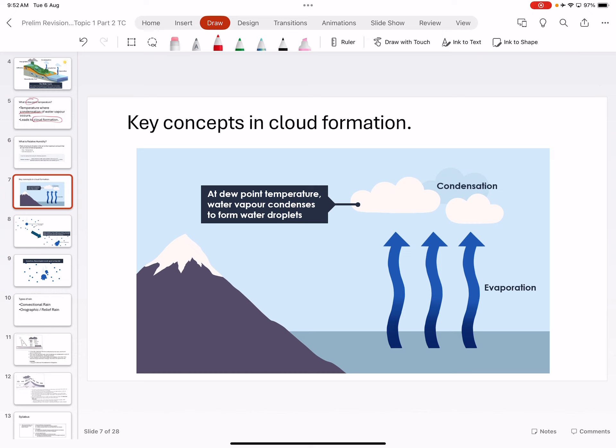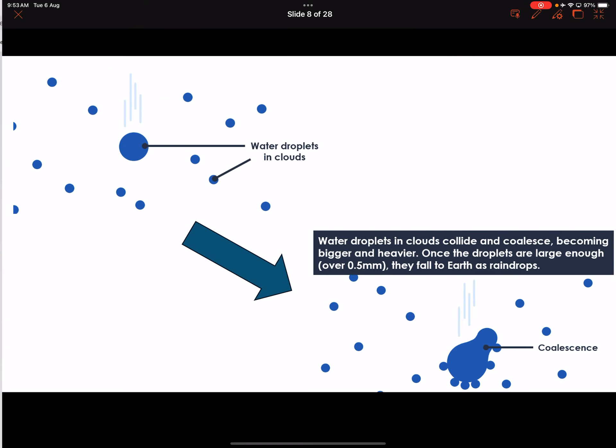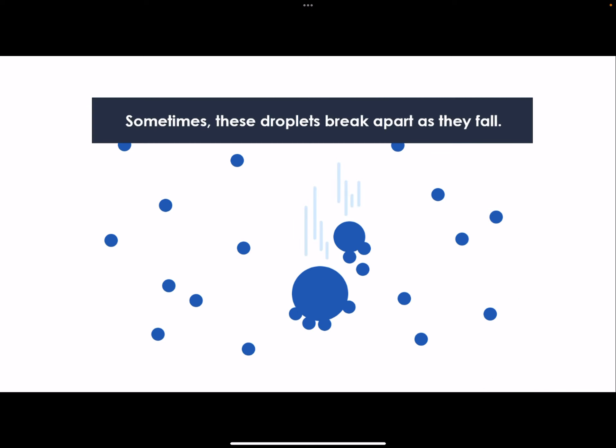For cloud formation, this basic diagram is extracted from your water cycle — you should know this. When you reach this point, you must be able to identify and describe how dust particles help form water. When raindrops gather they become bigger and eventually fall. As they fall they can break apart. You need to be able to describe this process of rain formation, but this is not what they like to test because it's without context.